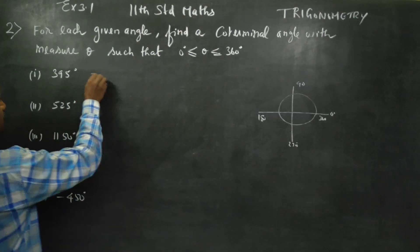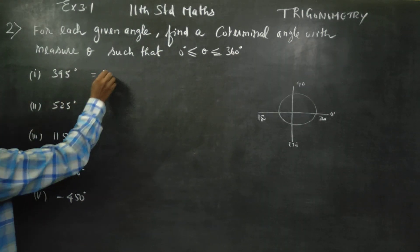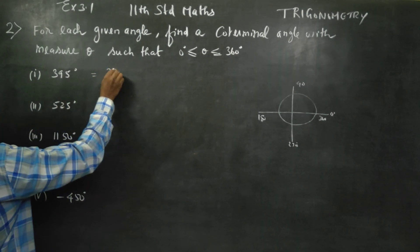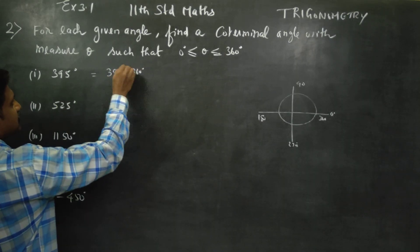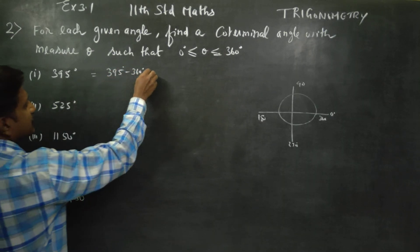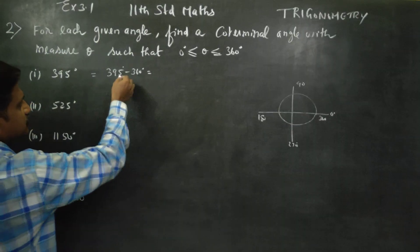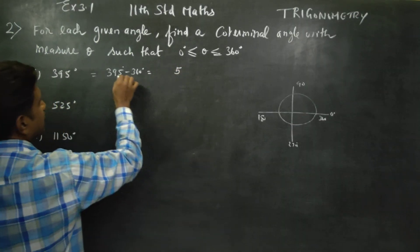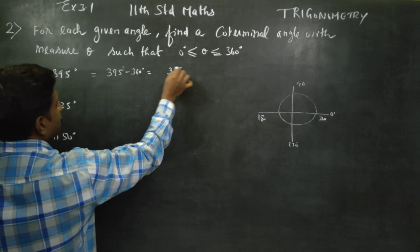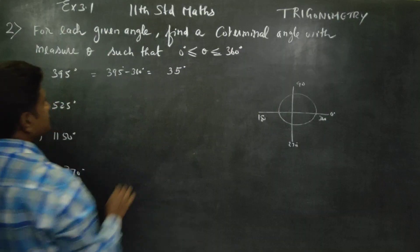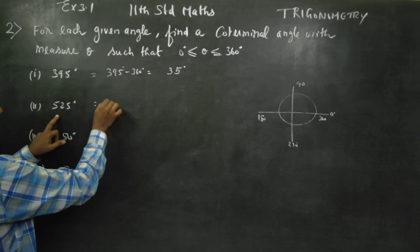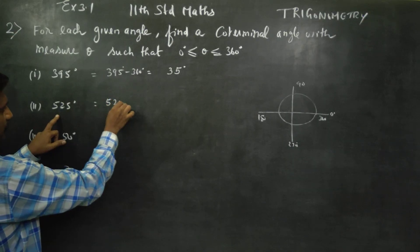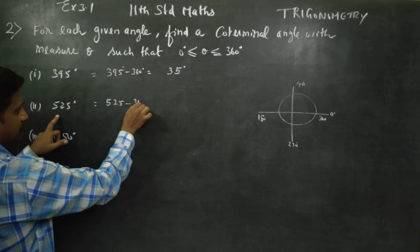For example, 395 degrees. To find the co-terminal angle, just subtract 360. You will get 395 minus 360, which gives you 35 degrees. So your answer is 35 degrees. That is the co-terminal angle.